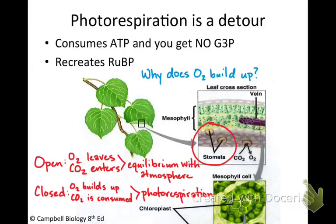So here's where we left off. The plants are photorespiring because they live in a place where they have to close their stomata. Now why would plants close their stomata? Generally, it is because they're trying to save water. Water can evaporate out of these stomata, and so if it is hot or it is dry, the stomata will close to save water for the plant.